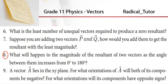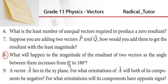What will happen to the magnitude of the resultant of two vectors as the angle between them increases from 0 degrees to 180 degrees?